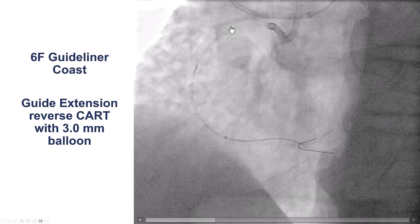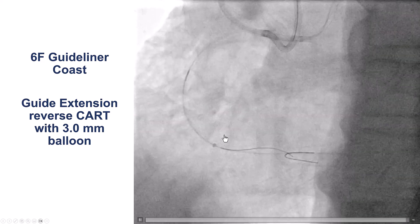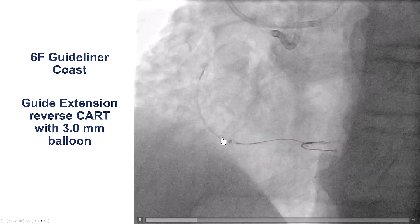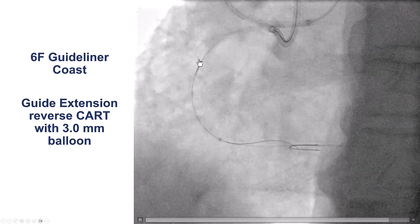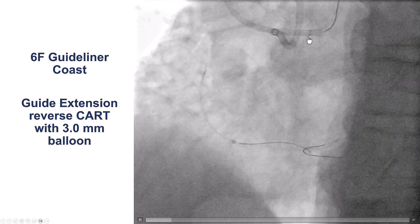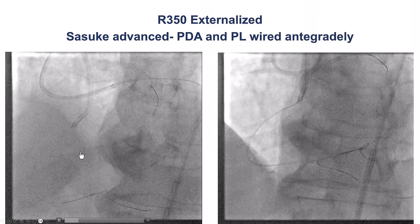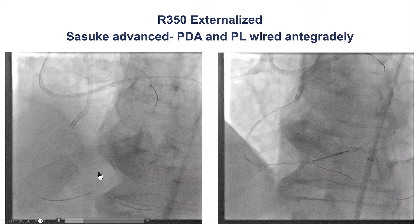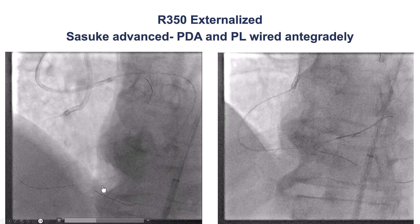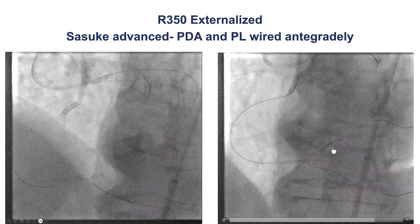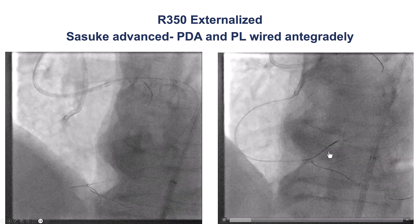We then delivered an antegrade guide liner catheter and performed a guide extension reverse CART with a 3.0 mm balloon, successfully entering into the antegrade Gaia catheter. We externalized and then used the same Sasuke dual-lumen microcatheter to wire the posterior descending artery as well as the right posterolateral, so now we had antegrade wires in every vessel.